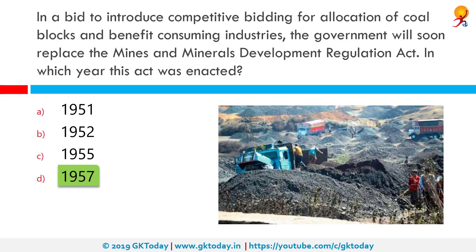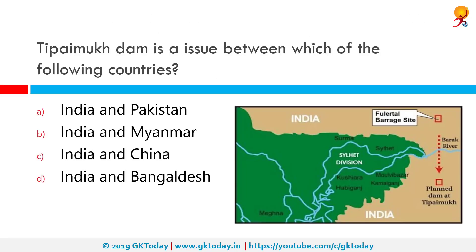Mining minerals come under the purview of the state government. River sand is considered a mining mineral as well, so all of these are covered under this act. Tipaimuk Dam is an issue between which of the following countries? Correct answer is India and Bangladesh. It is a dam located in the south-western hilly region of Manipur, bordering the Indian state of Mizoram. It is one of the six tribal development blocks of Churachandpur district in Manipur state. Pavang is the subdivisional block headquarters, and Tipaimuk is the 55th assembly constituency of Manipur.